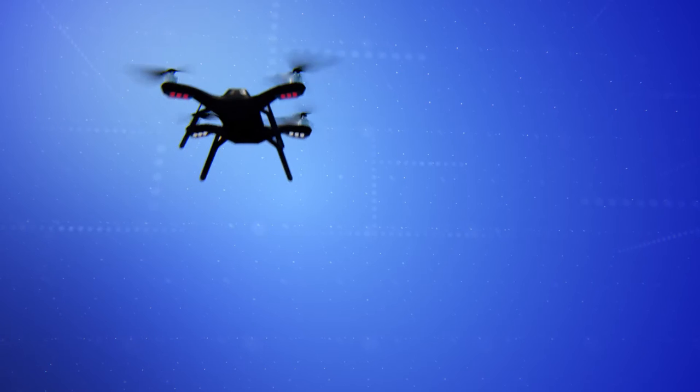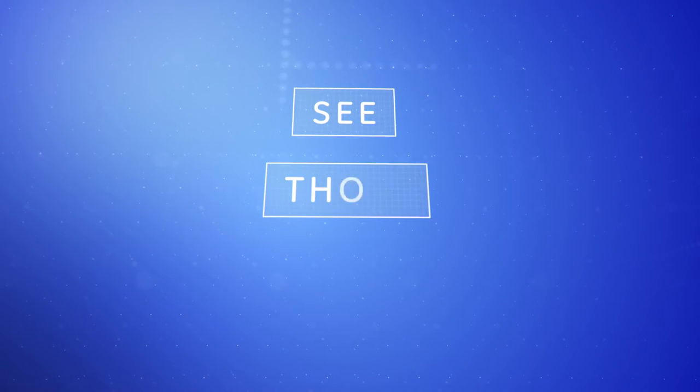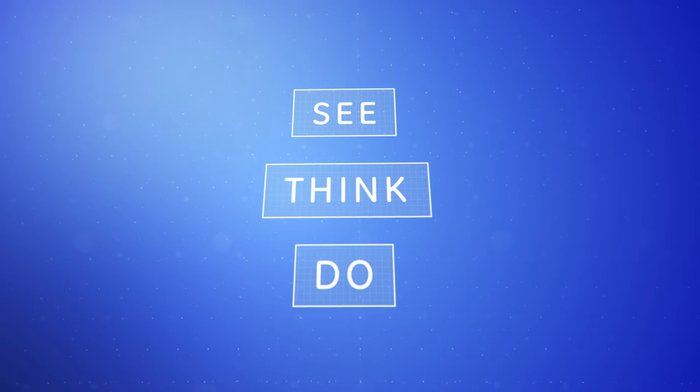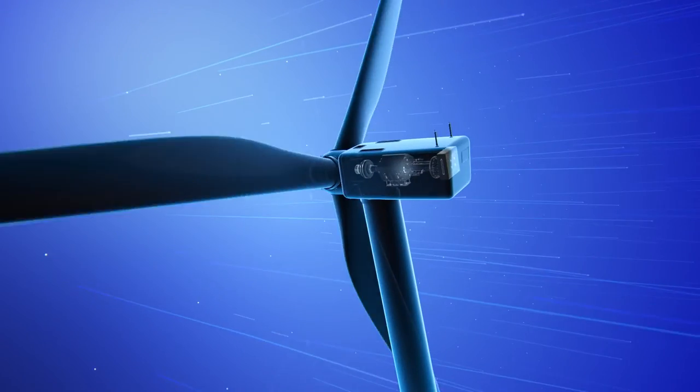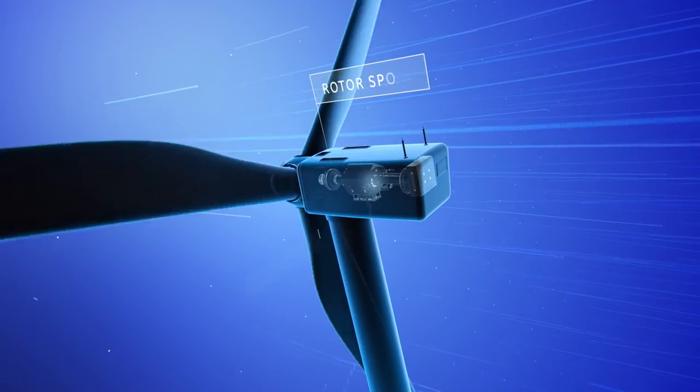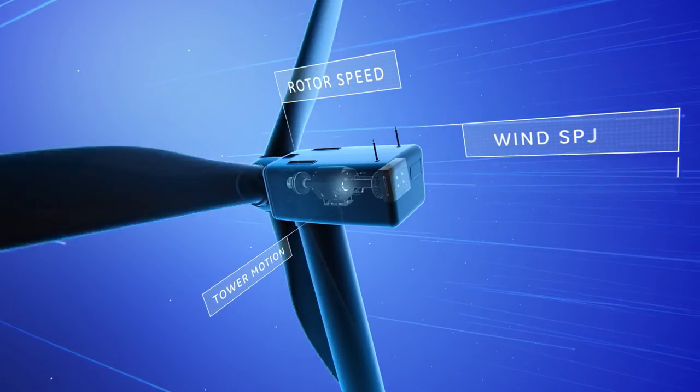So that's the basics of controls. We use the same idea of see, think, and do to run just about everything that GE makes, like a wind turbine. The many sensors on a turbine measure rotor speed, tower motion, wind speed, and wind direction.